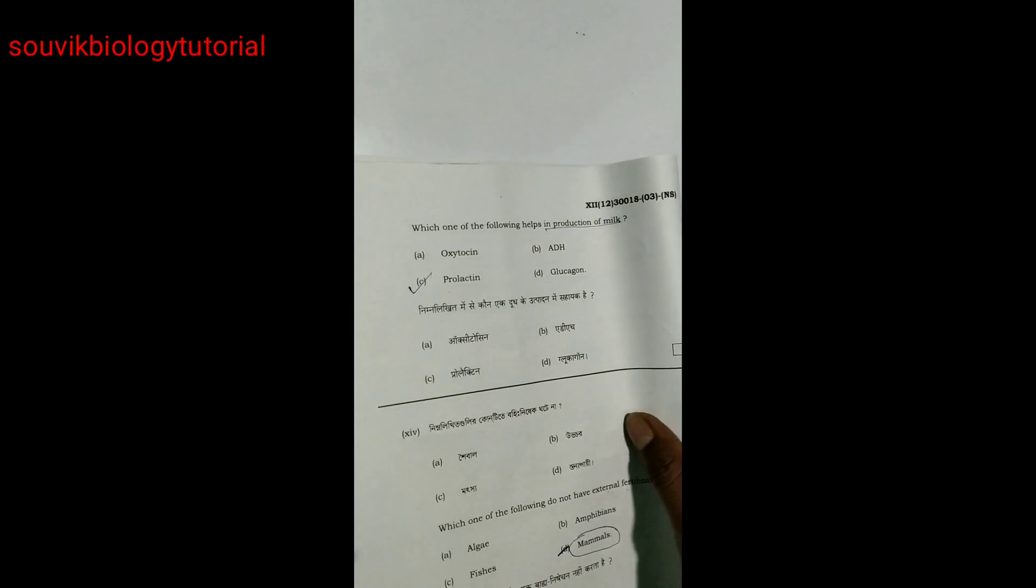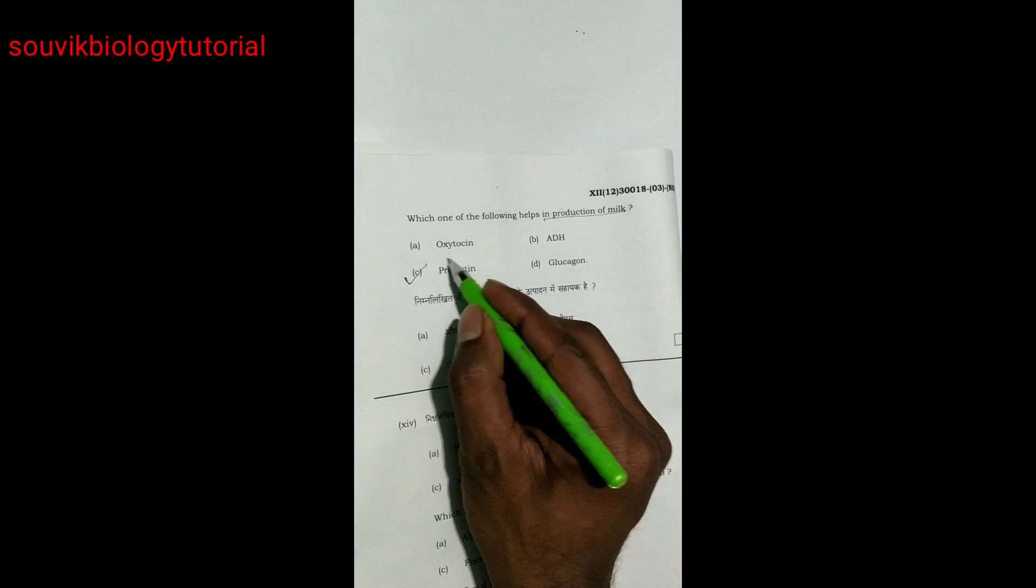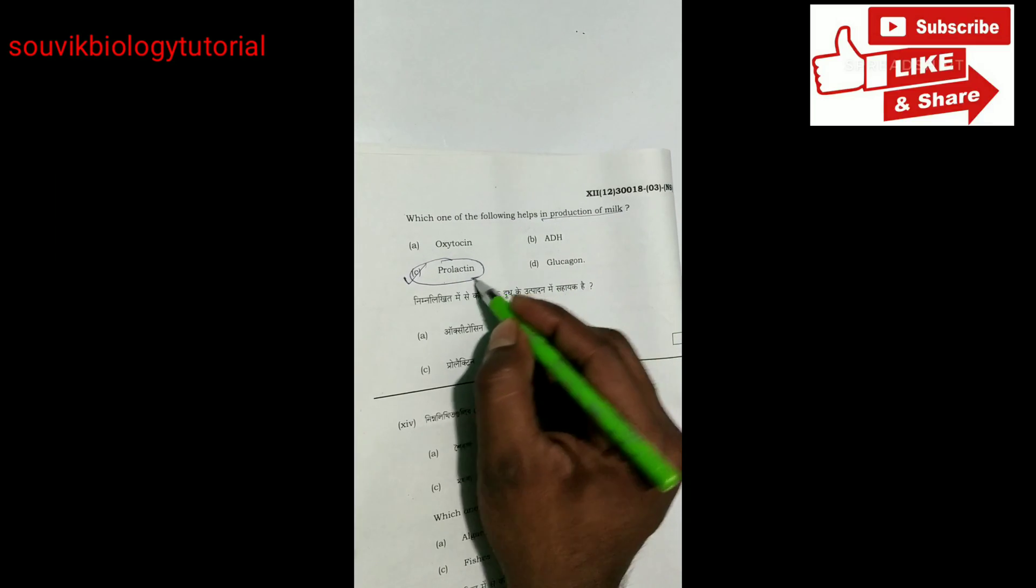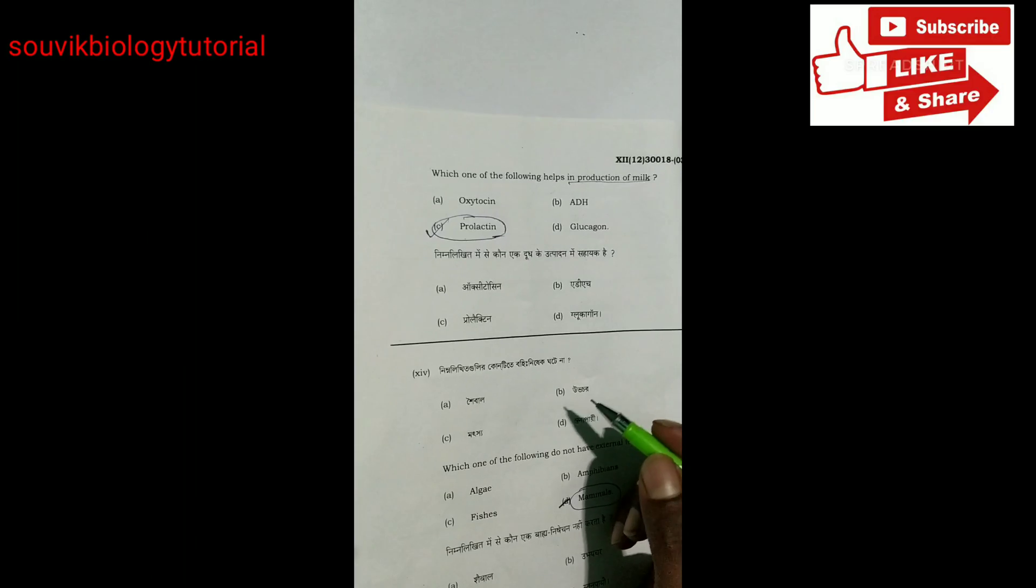Lactation. Next. Which one of the following helps in the production of milk? Prolactin helps in the production of milk. Next.